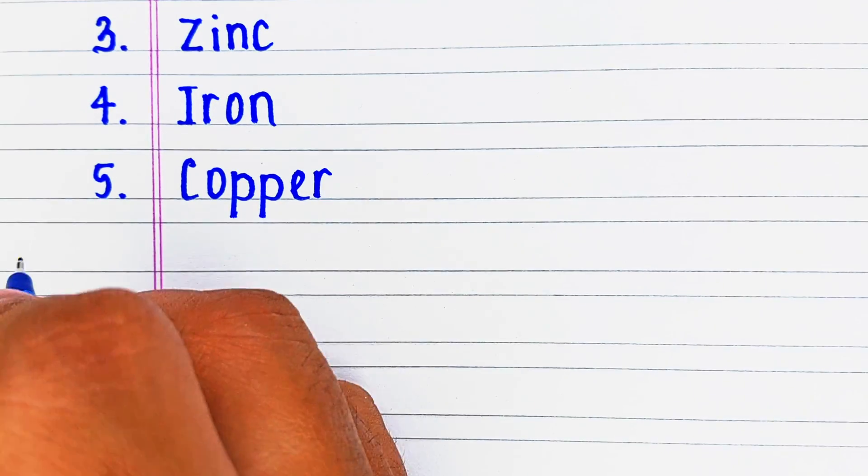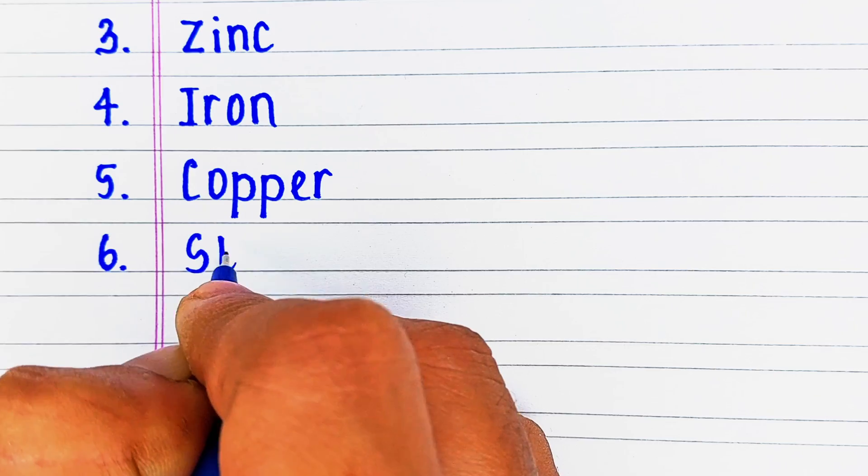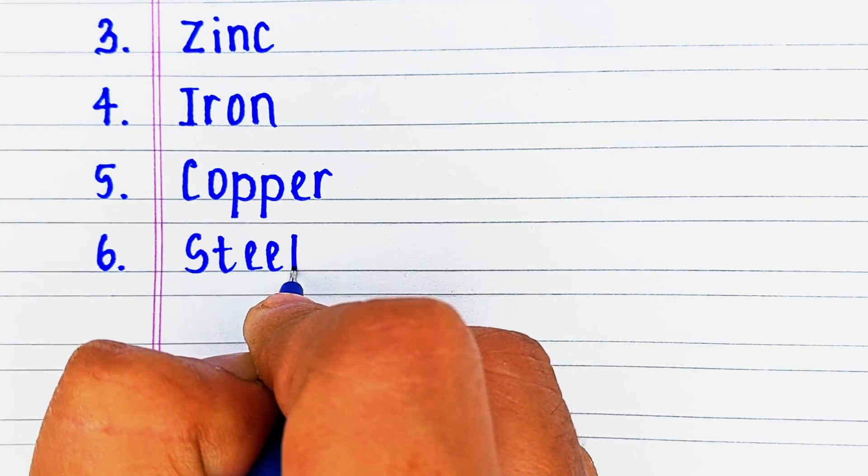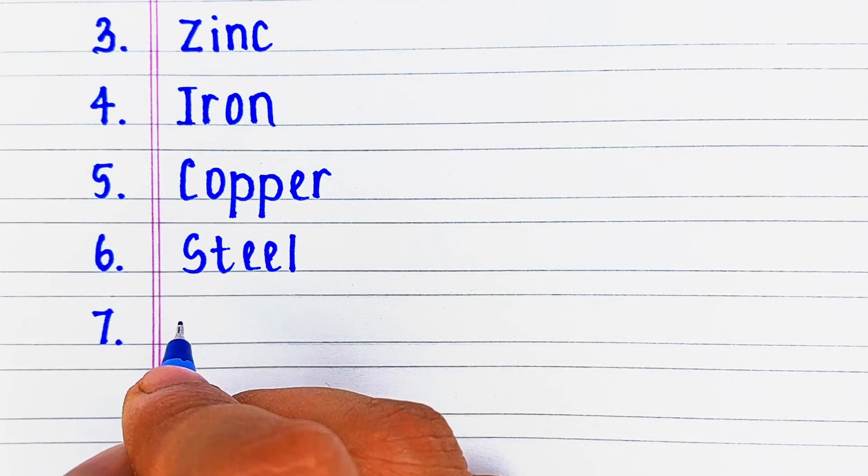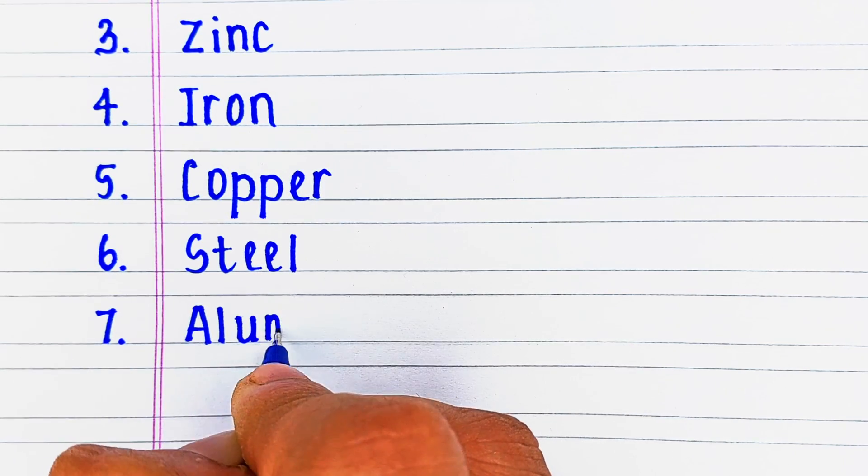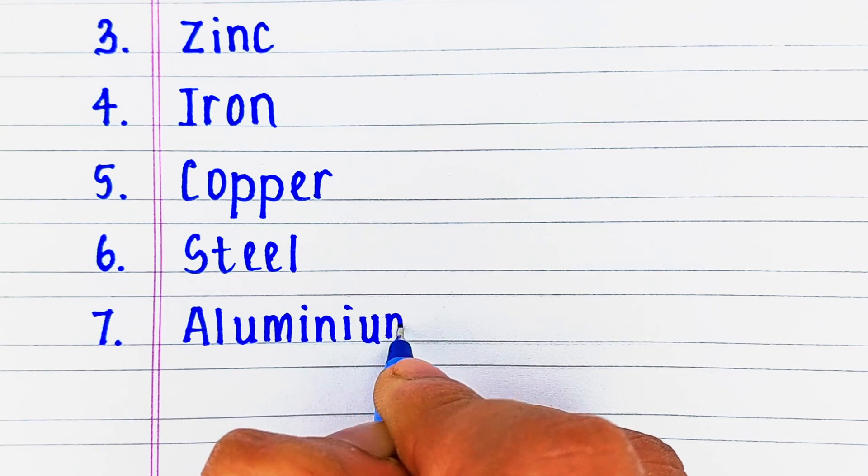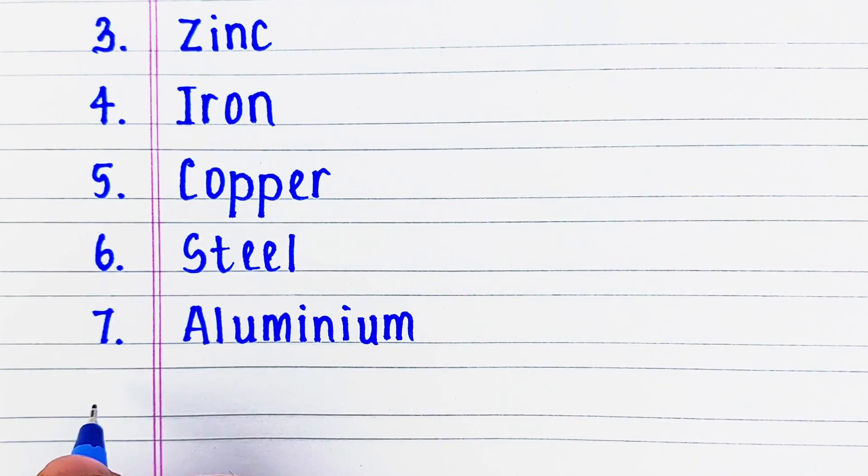Next is C-O-P-P-E-R, copper. On number six, we have S-T-E-E-L, steel. Next metal in our list is A-L-U-M-I-N-I-U-M, aluminium.